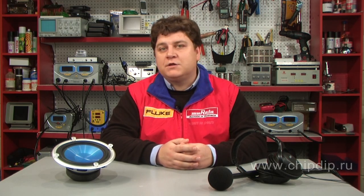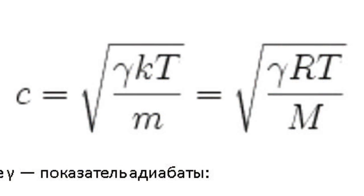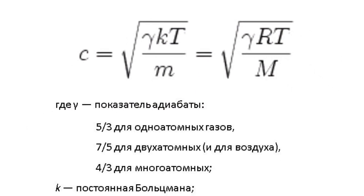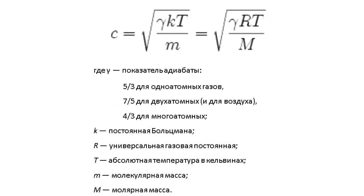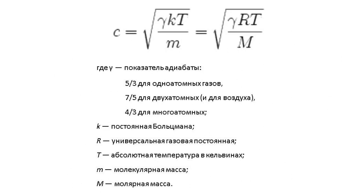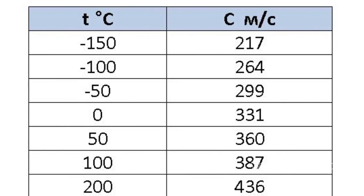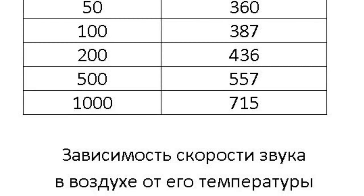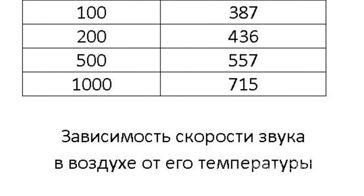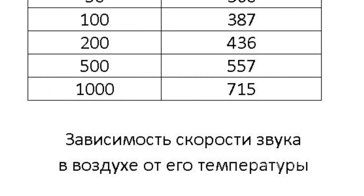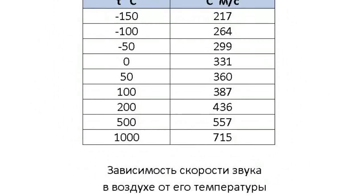If we take the formula, we'll see that speed depends on temperature. As the temperature grows, the speed increases. This happens because of accelerated particle motion in substances at higher temperatures. And vice versa, the speed of sound in cold air or any other medium decreases as the temperature falls.